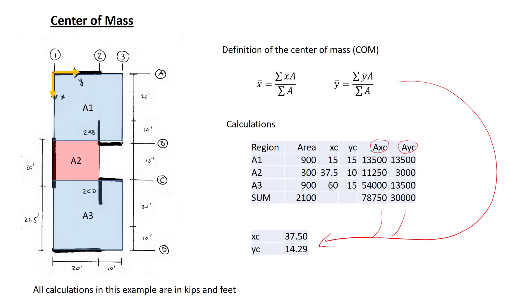Using the equations above, these sums right here and this sum right here, we get the following values for our center of mass. Our center of mass is located right here. This is approximately 14 feet in the y direction and 37 and a half feet in the x direction. The 37 and a half feet we could have determined by inspection because the diaphragm is symmetric in this direction.